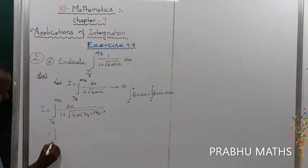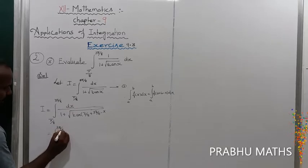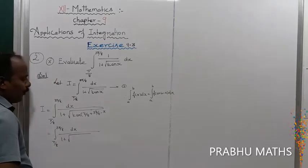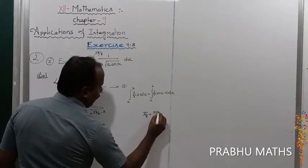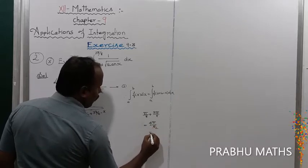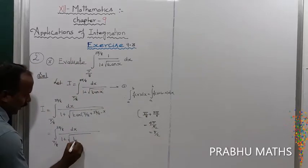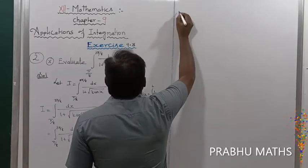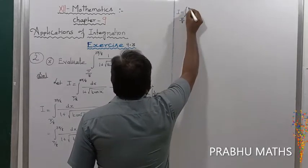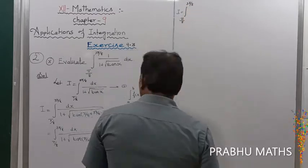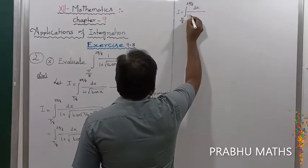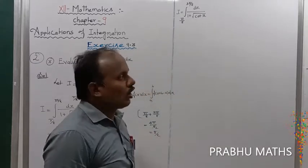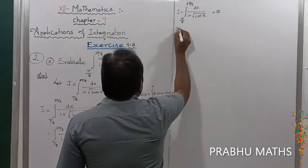So π/8 + 3π/8 equals 4π/8, which equals π/2. Therefore we have tan(π/2 − x). Since tan(90° − θ) equals cot θ, this simplifies to cot x. So I equals integral from π/8 to 3π/8 of dx divided by 1 plus root of cot x. This is equation number 2.